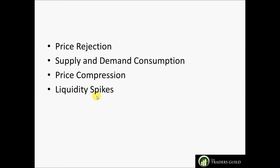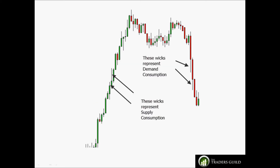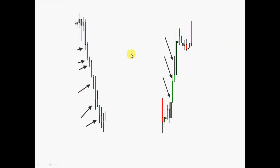Supply and demand consumption is the action of price absorbing demand or supply. The most common way to see this is on a chart in a strong trend. In an uptrend, price spikes upward and the wicks on the top of the bars are consuming supply, paving the way for price to move higher. On the way down, wicks on the underside of the bars represent demand consumption, paving the way for price to move lower.